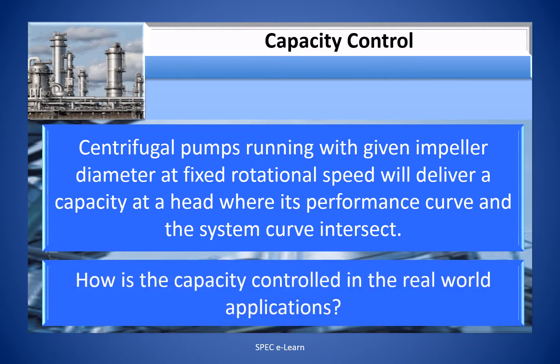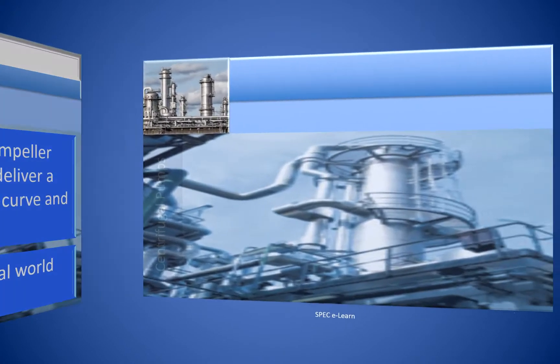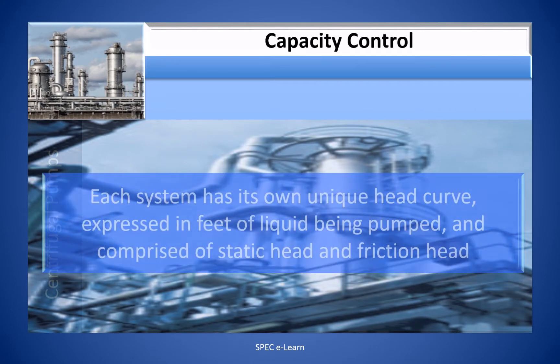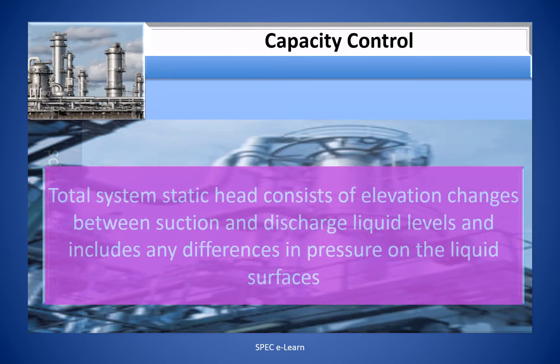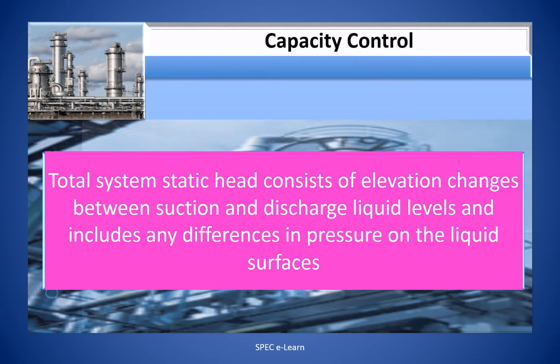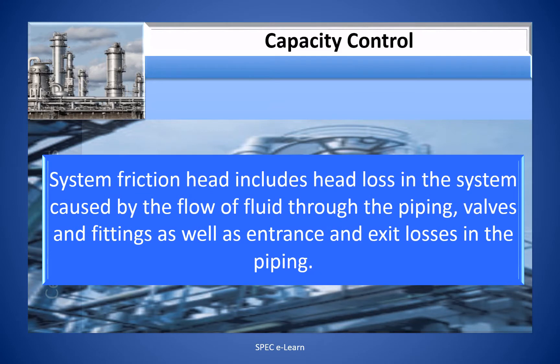How is the capacity controlled in real world applications? Every system has its own unique head curve, expressed in feet of liquid being pumped and comprised of static head and friction head. Total system static head consists of elevation changes between suction and discharge liquid levels and includes any differences in pressure on the liquid surfaces. System friction head includes head loss caused by the flow of fluid through the piping, valves and fittings, as well as entrance and exit losses.